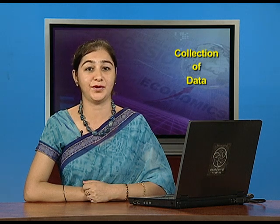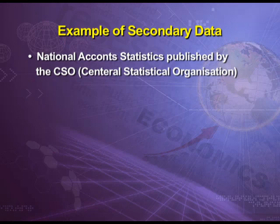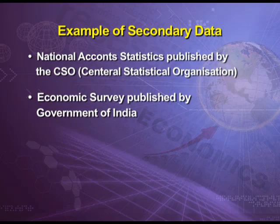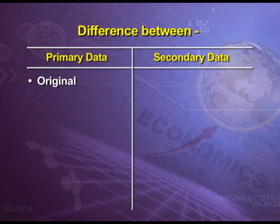The main examples of secondary data are national account statistics published by the CSO — that is, the Central Statistical Organisation — or the Economic Survey published by the Government of India. After knowing the meaning of primary and secondary data, it is desirable to differentiate between the two. The first difference is on the basis of originality: primary data is original and secondary data is not original.